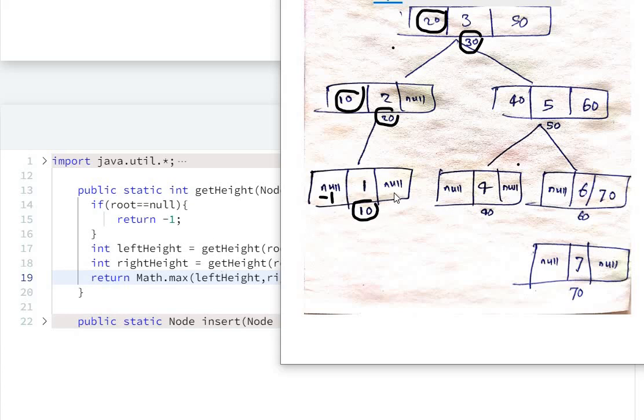Similarly, it will go right. After left, it will call right, which will also return minus one because it's null. Now the return function will do Math.max of left and right. Which is the maximum of these two? Minus one. Plus one will make this height zero.